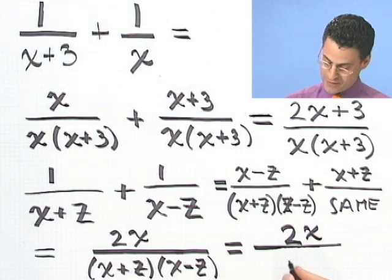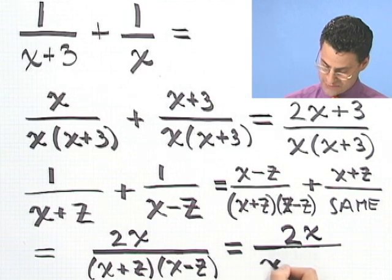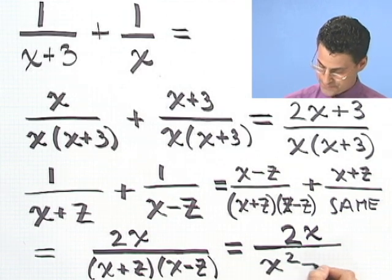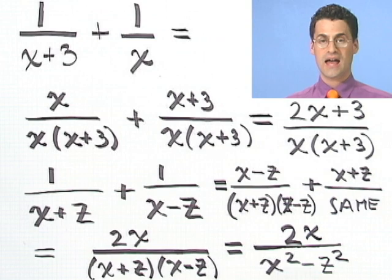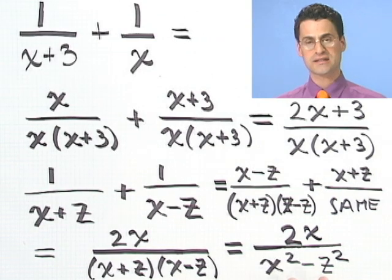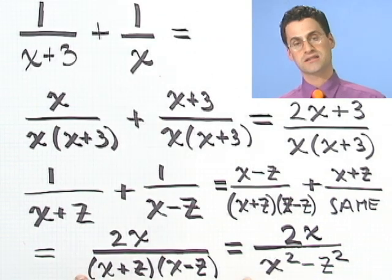OK. All right, if you multiply out the bottom, you just see a difference of two perfect squares. And as attractive of a bottom this is, I still think this is the way I would like to see the answer for me.